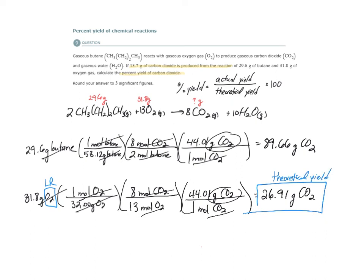So my percent yield, using this equation, my percent yield of carbon dioxide is going to be equal to the actual yield of CO2, which is 13.7 grams, divided by the theoretical yield, which is 26.91 grams, times 100. So 13.7 divided by 26.91 is 0.509. So I'm moving the decimal place to the right two times, I get 50.9%.